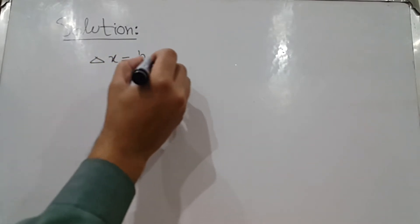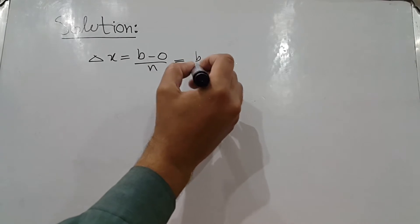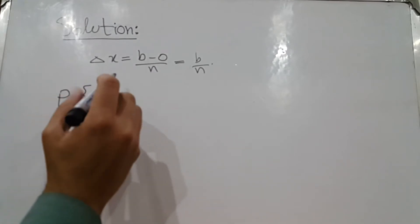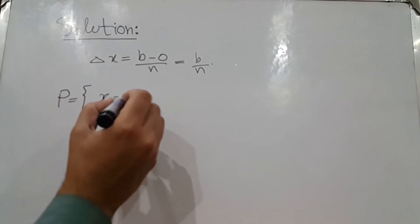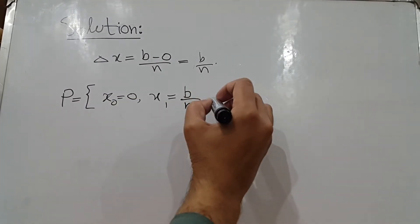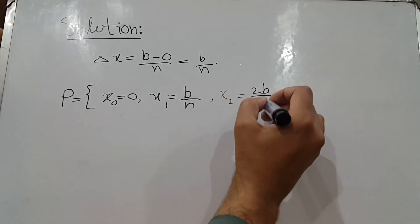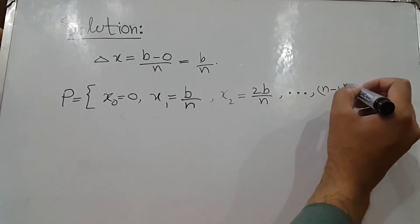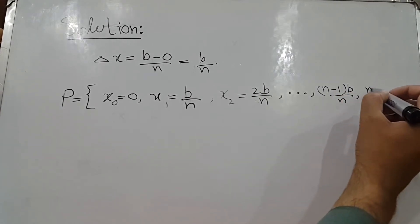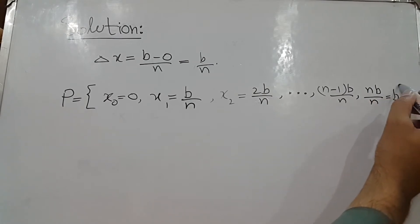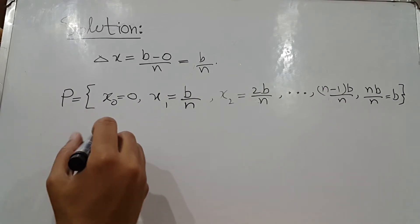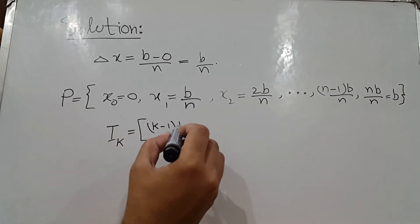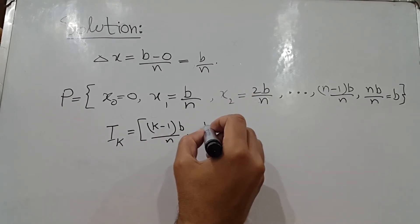Δx = (b − 0)/n = b/n. Consider the partition P = {x_0 = 0, x_1 = b/n, x_2 = 2b/n, ...}, continuing in this way up to x_{n-1} = (n−1)b/n, and the last point x_n = nb/n = b. The k-th interval I_k = [(k−1)b/n, kb/n].